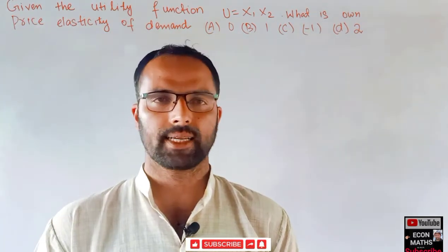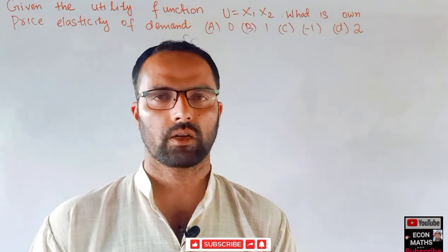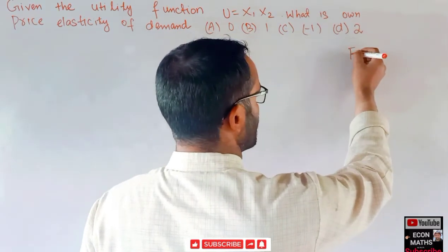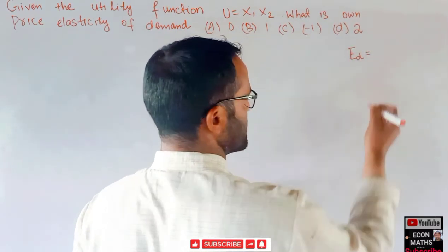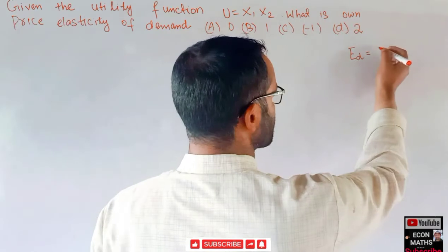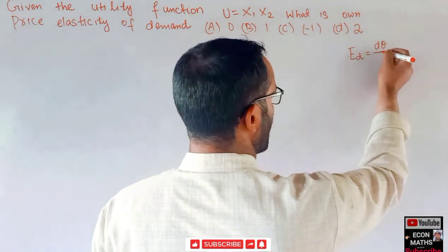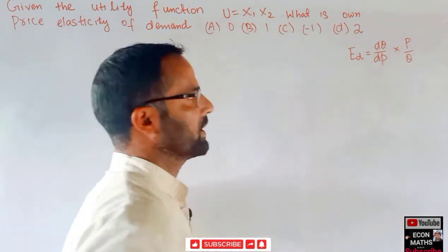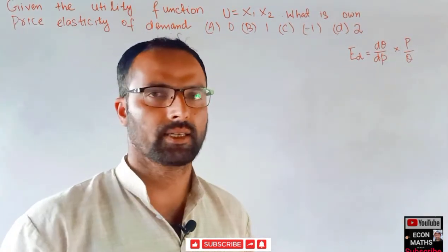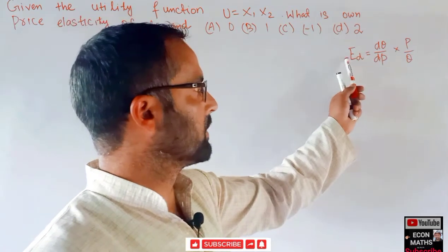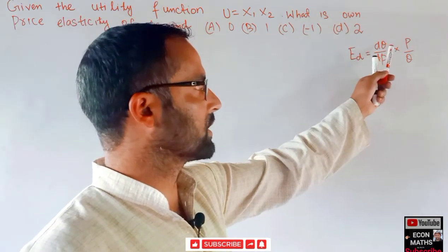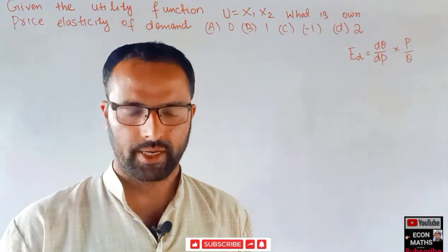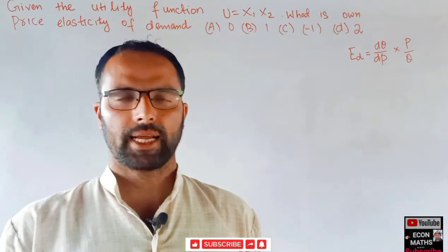First, we will see what is the formula for own price elasticity of demand. Elasticity of demand is given by dq upon dp times p by q, where q is the quantity and p is the price. That means elasticity of demand is equal to the slope of the demand function times price divided by quantity.